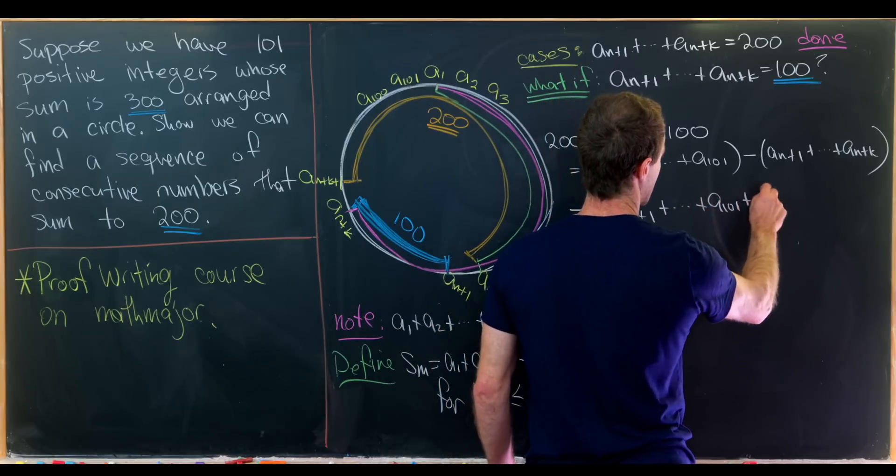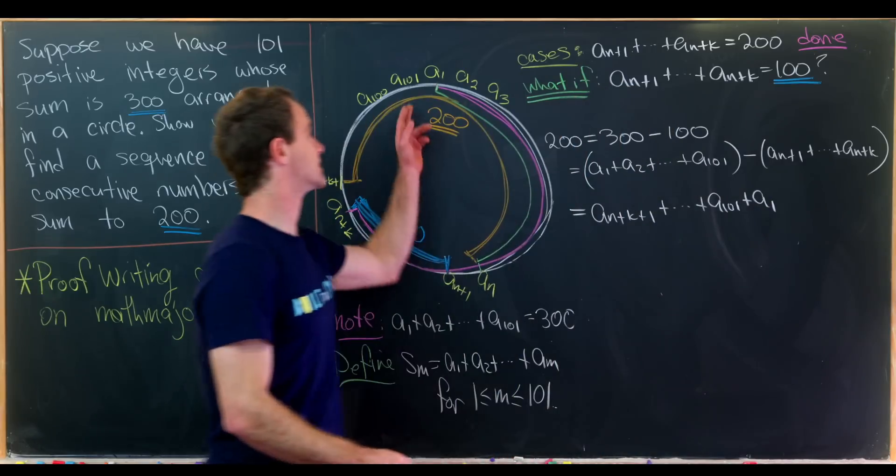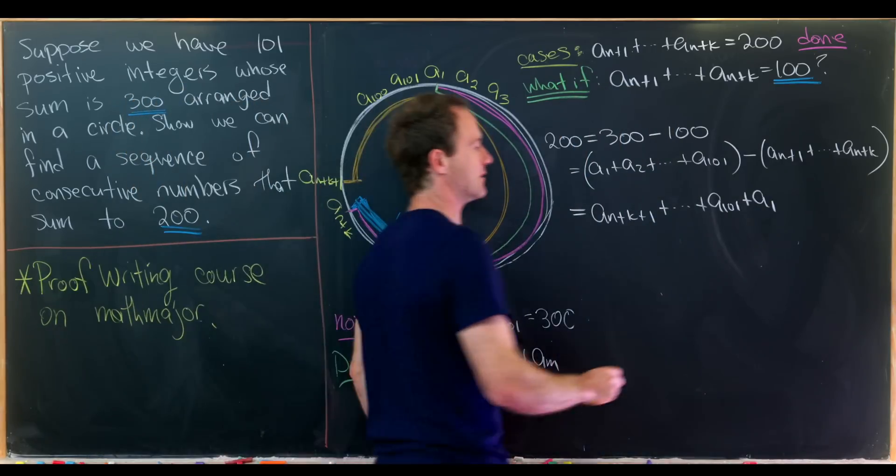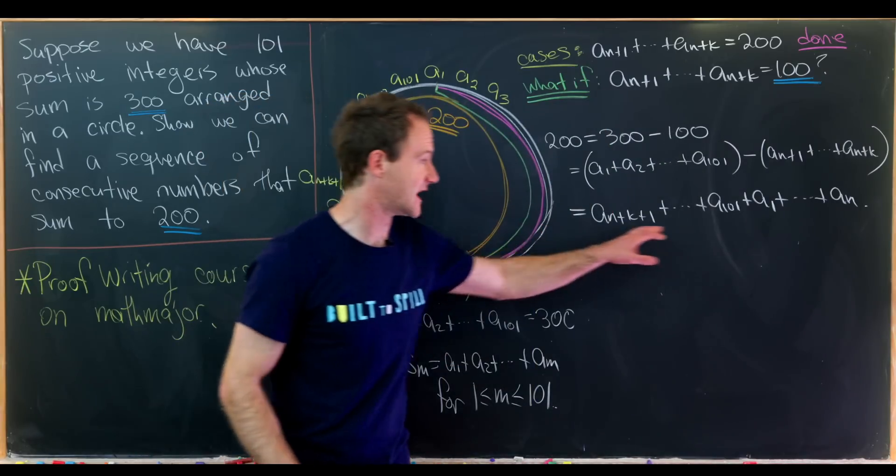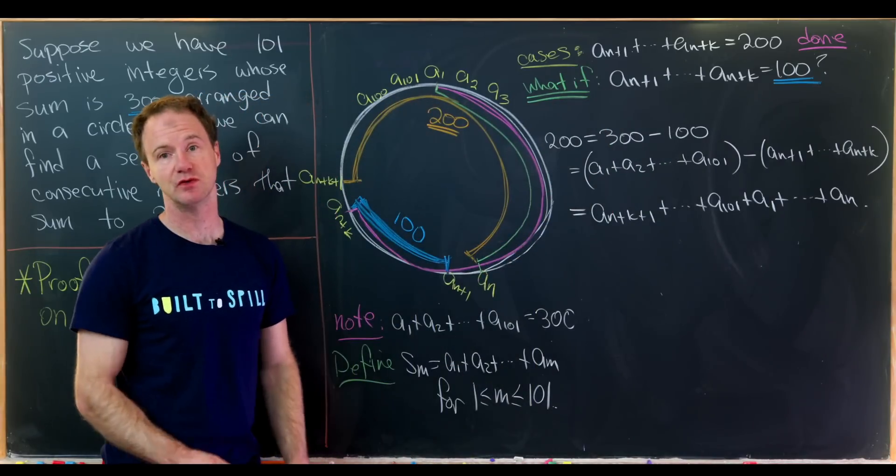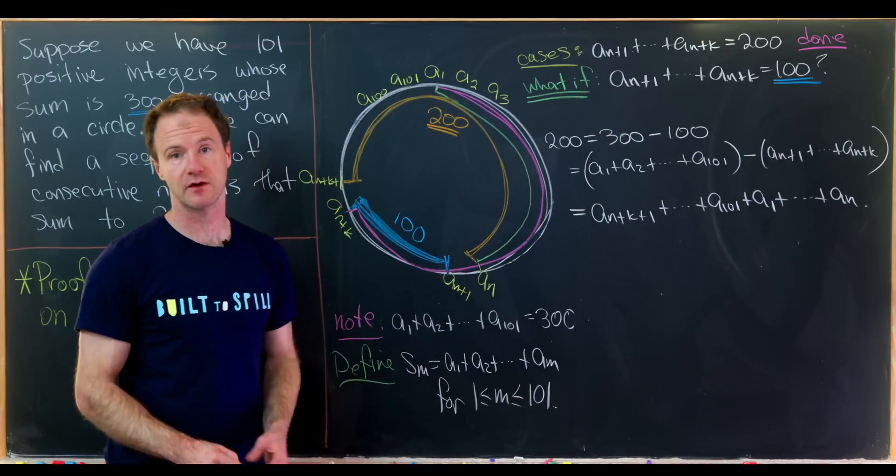And we could write this as consecutive numbers an plus k plus 1 plus dot dot dot all the way up to a101 plus a1. There's the turnover all the way up to an. So we have consecutive numbers that sum to 200 really in either of those cases.